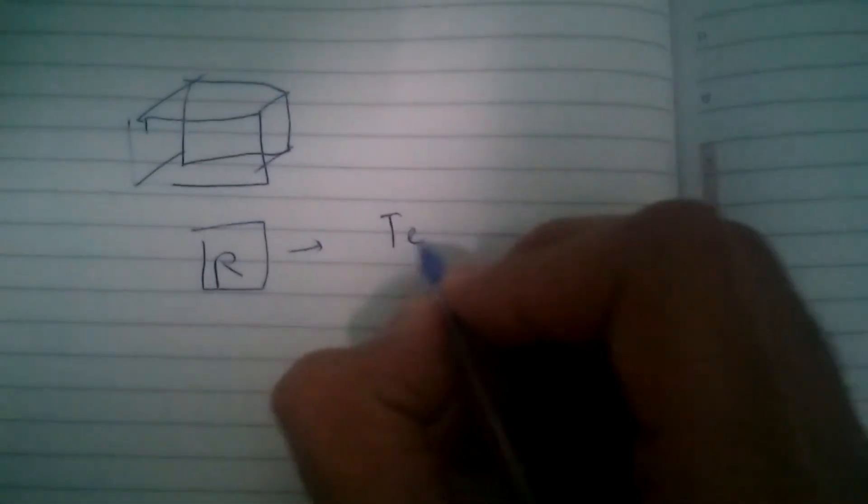Hello everybody, today we are going to talk about tensors. Tensors are physical quantities which are made up of two vector quantities. For example, we have a cuboid and it has a resistance R. You may wonder that resistance is a scalar quantity, but it's not. Resistance is a tensor quantity.